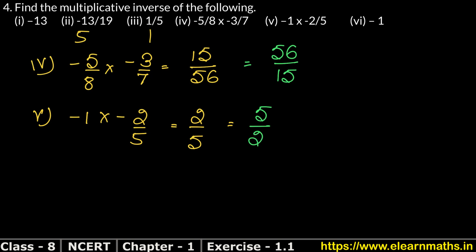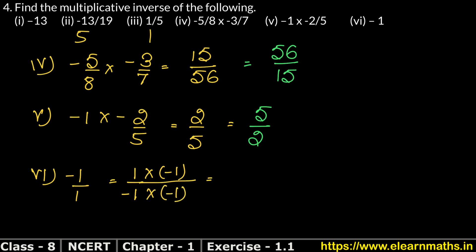Let's do the last one. Sixth part is minus 1. Minus 1 is 1 upon 1, so the multiplicative inverse is 1 upon minus 1. Now minus 1 is in the denominator. Minus divided by minus is plus, and 1 times 1 is 1. So the answer is minus 1 upon 1, which is minus 1. The multiplicative inverse of minus 1 is minus 1.